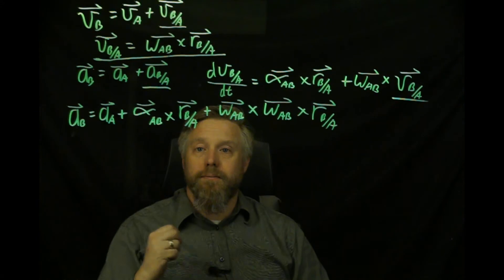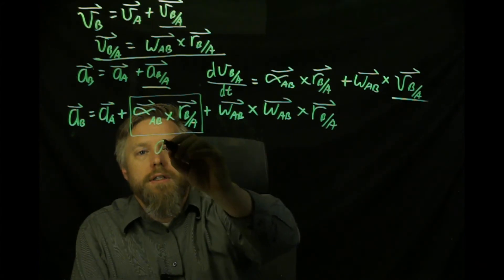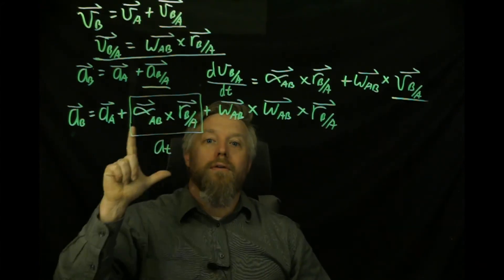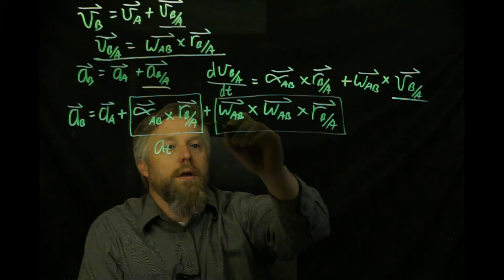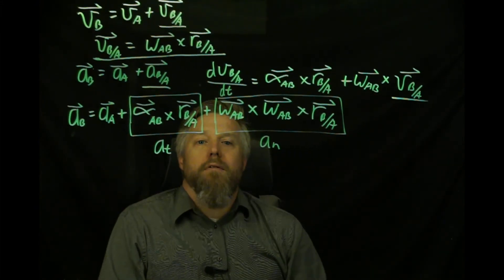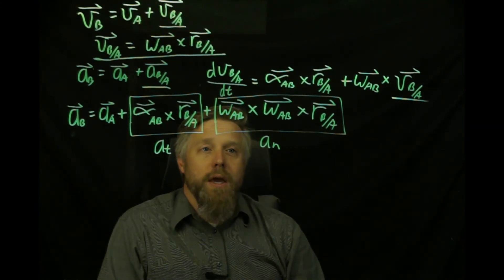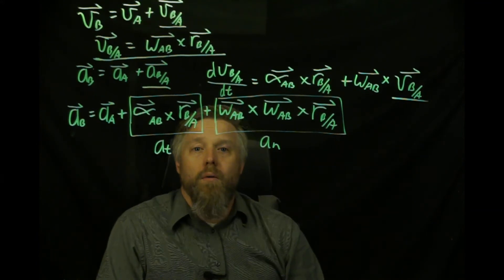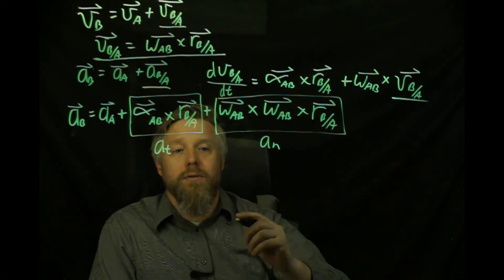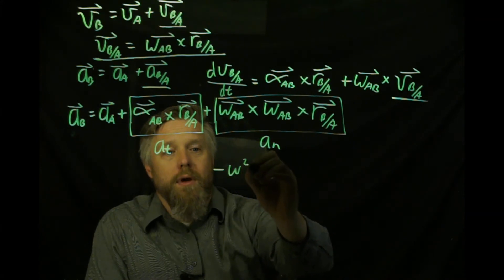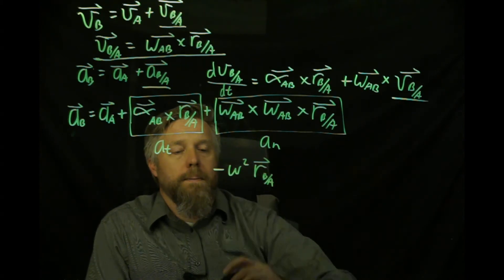Let's see if we can spot those. Looking at the first term, alpha cross r, this would be our tangential component of acceleration in that local coordinate system. And we have omega cross omega cross r, which would be our normal component. You might remember our normal component being v² over r — well, they actually end up being the same thing. Our omega cross omega cross r has a 2D shortcut: negative omega squared times r, where r is a vector.